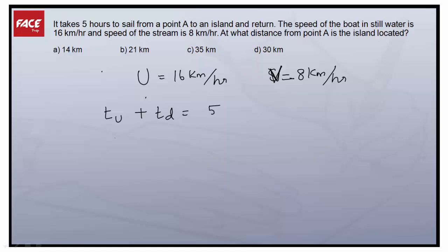So what is the formula for time? Time is distance by speed. So distance by upstream speed which is given as 16 minus 8 which is 8 km per hour.